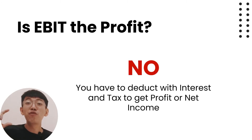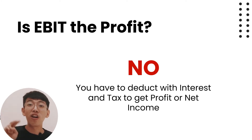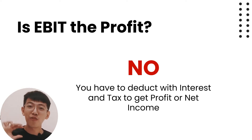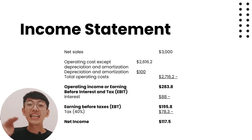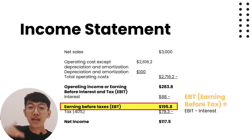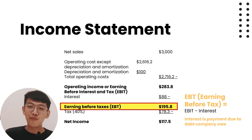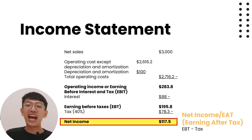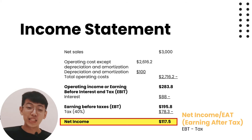EBIT is Earnings Before Interest and Tax. To find the profit, or net income, you have to first deduct with interest, then deduct with tax. EBIT deducted by interest is called EBT, Earnings Before Tax. EBT deducted by tax gives us EAT, Earnings After Tax, also called net profit or net income. Interest is the payment due to debt, and tax is calculated as a percentage of EBT.